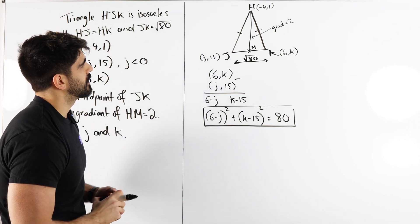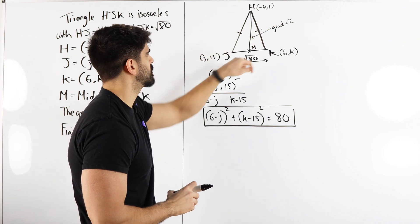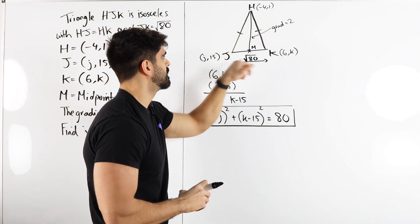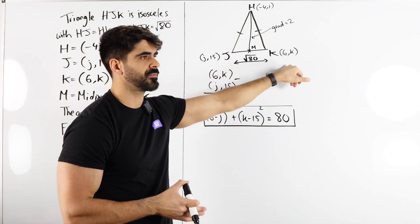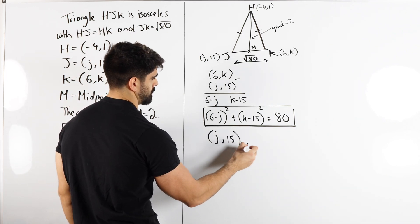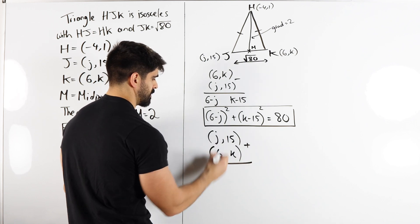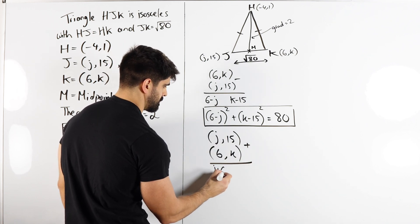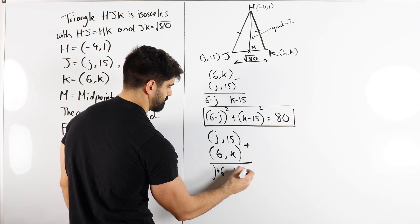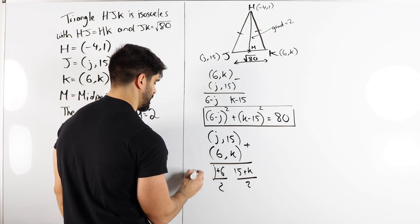The next thing we need to think about is this midpoint and that this gradient being 2. It looks like we're going to have to find the midpoint by adding these and dividing them by 2. We add them. So we get (J+6, 15+K) and then divide by 2. That's my midpoint.